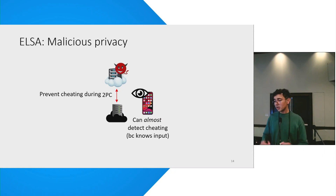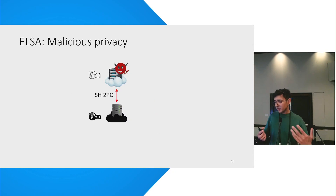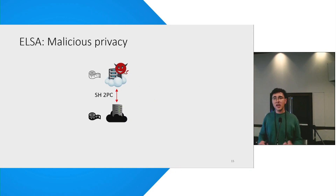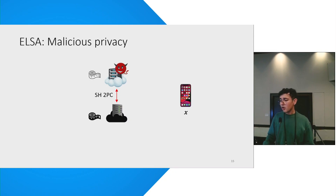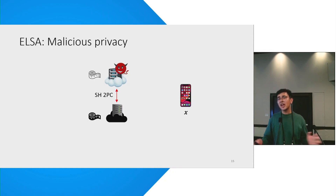I'll be more concrete now. The two servers are running a semi-honest 2PC — there are very efficient ways to achieve semi-honest 2PC in this setting. Both servers have their own random tapes which are used in this protocol. And we have the client, which has its input X which it has already secret shared between the two servers, and the servers are running the 2PC on those shares.